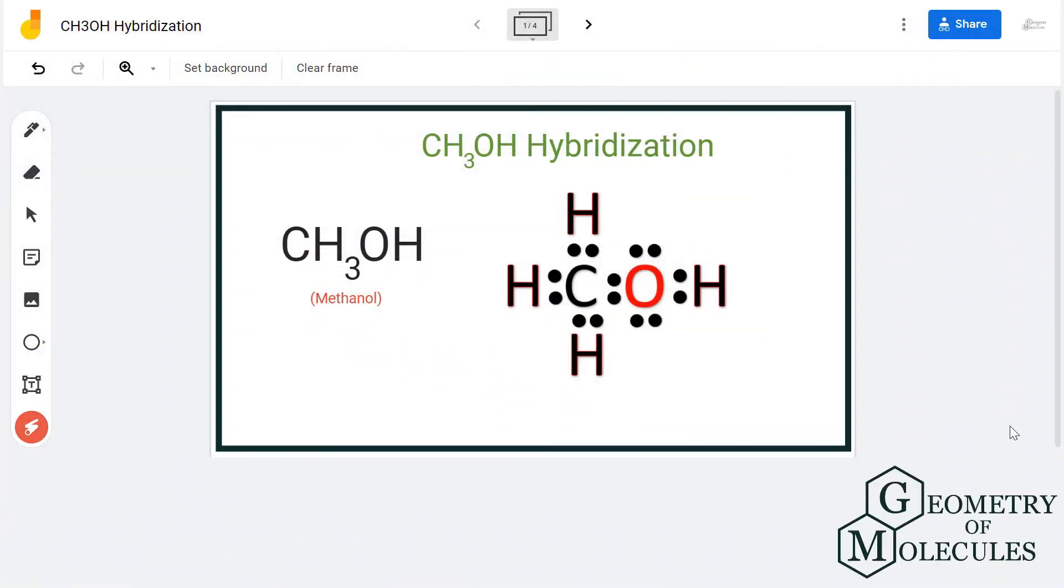Hi guys, today in this video we are going to determine the hybridization for CH3OH molecule. It's the chemical formula for methanol and it is made up of one carbon atom, three hydrogen atoms, and an OH functional group. This group represents the alcohol group. To understand its hybridization, we will first look at its Lewis structure followed by the steric number.